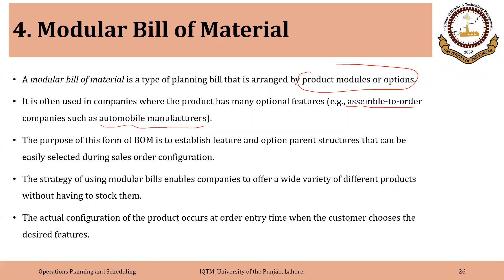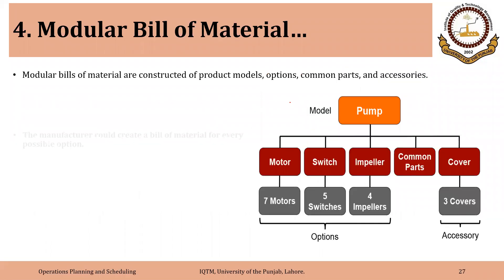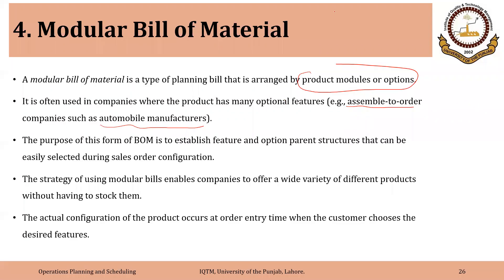The actual configuration of the product occurs at order entry time when the customer chooses the desired features. We discussed this concept in previous lectures regarding assemble-to-order companies — here we have more options but less inventory. That is the key benefit of the assemble-to-order environment and using modular bill of material: offering more options to the customer while keeping less inventory.